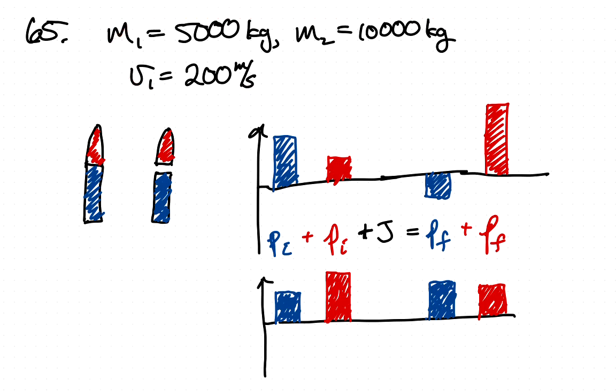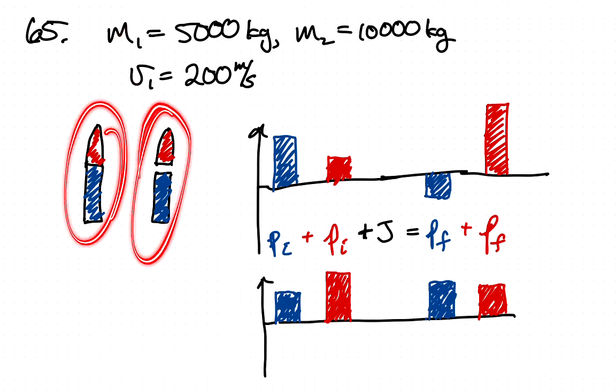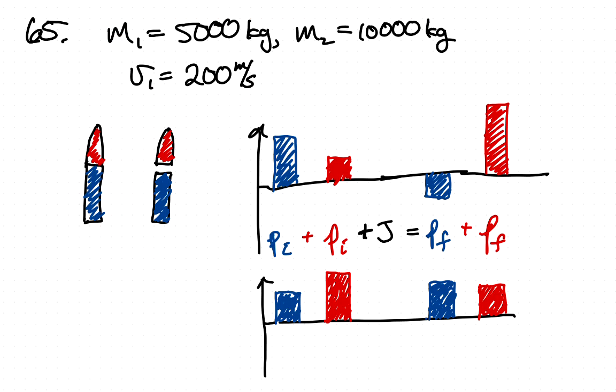So the first thing we want to do is look at the rocket and the fuel tank as a system. And so there's no external impulses acting on this system. And so initially, the rocket will have, or the fuel tank will have some momentum and the rocket will have some momentum. In the previous problem, they said that the fuel tank was twice as massive as the rocket. So that's why I have a smaller bar here for this momentum.